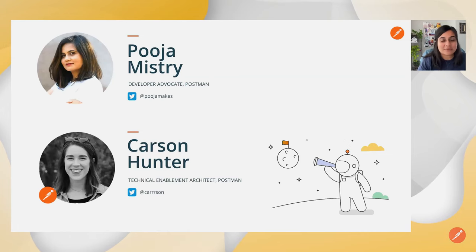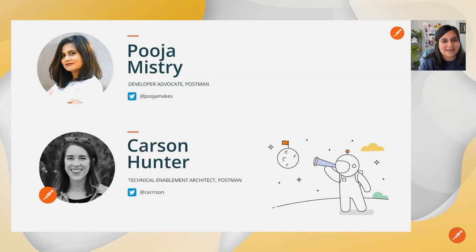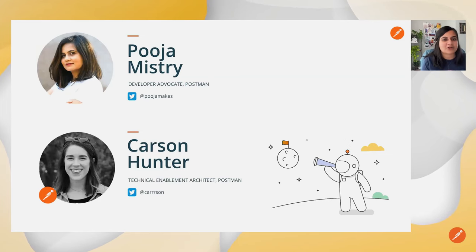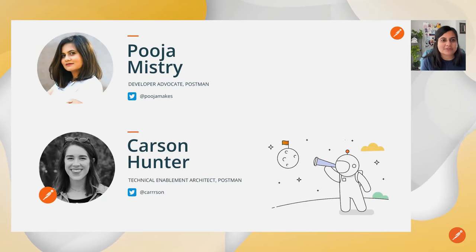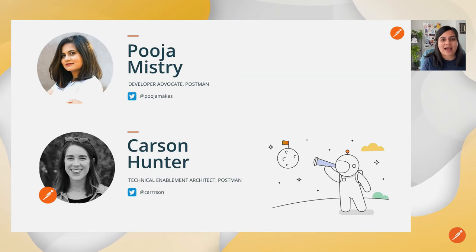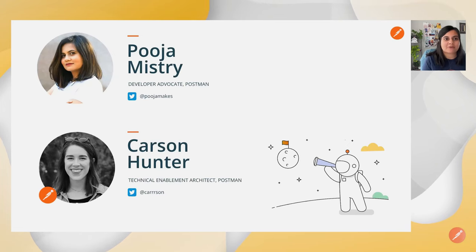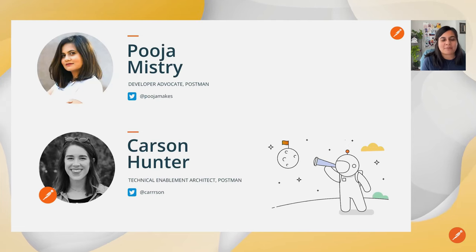My name is Buja Mistry. I've been at Postman for about six months now as a developer advocate. I've worked as a developer advocate for a few years now, and I'm really excited to encourage people to do their best work using amazing tools. Previously, I've also been an automation test engineer, and I worked heavily with Postman to convert a lot of manual API tests into automation tests.